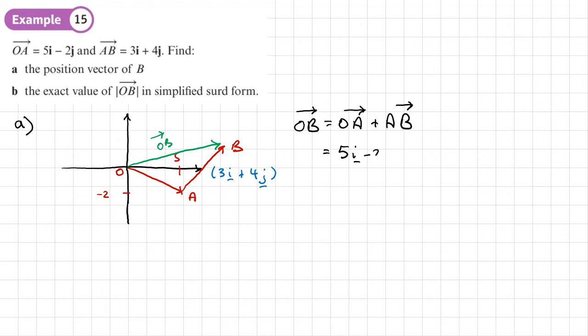So OB is equal to OA, which is 5I minus 2J, plus AB, which is 3I plus 4J. So 3I plus 5I gives us 8I minus 2J plus 4J gives me plus 2J. So this is the position of B. OB is the position of B.